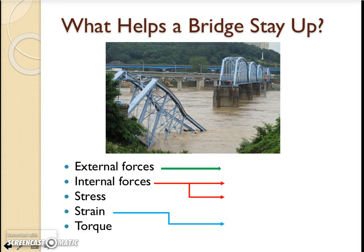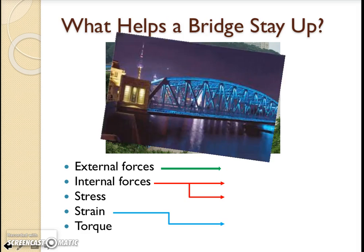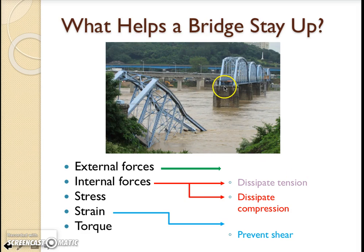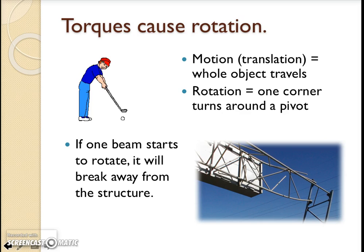So, let's go through our checklist. What can we do to help the bridge stay up? We can dissipate weight, which really isn't going to be a problem because it's tension and compression within the bridge beams that we want to be dissipating. We can prevent shear by building a strong middle full of nice diagonal crossbeams that can't be bent. Now, how do we make sure that one piece doesn't fall and start to pivot around another as it rotates? What are we going to do about torque? Torques cause rotation. Bridges don't tend to translate from point A to point B — rotation is where everything stays the same except one corner, and you can turn around that one corner like a pivot. Well, if one beam starts to rotate, it will break away from the structure and your bridge will be broken all the same.